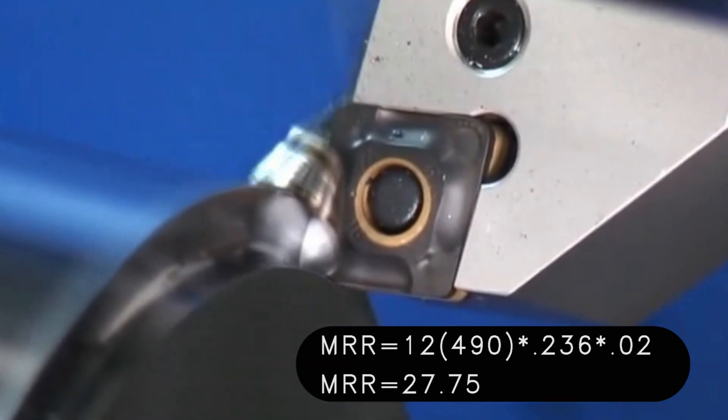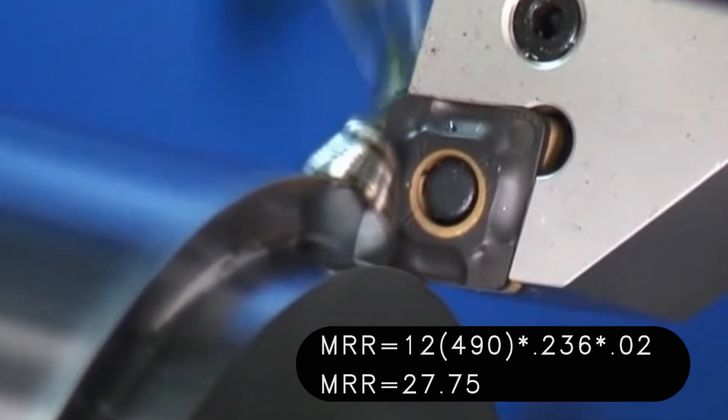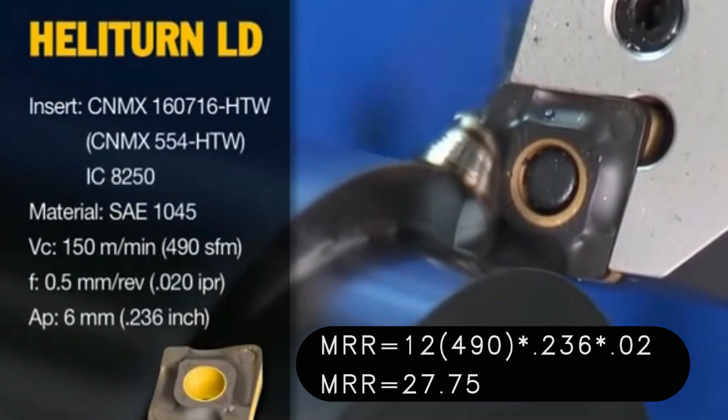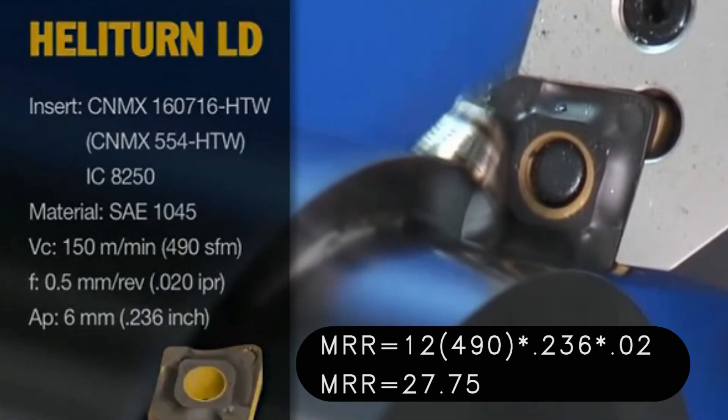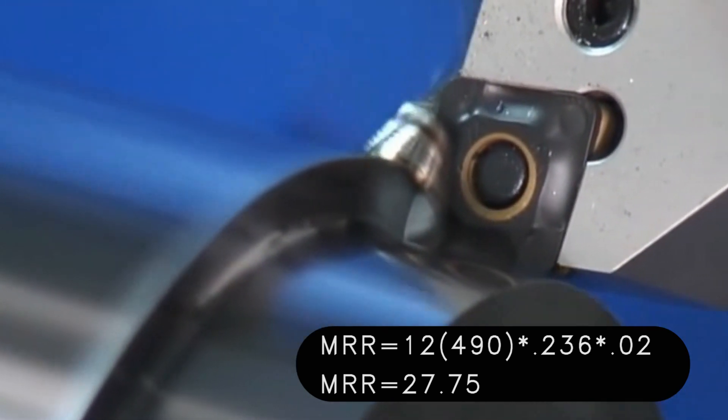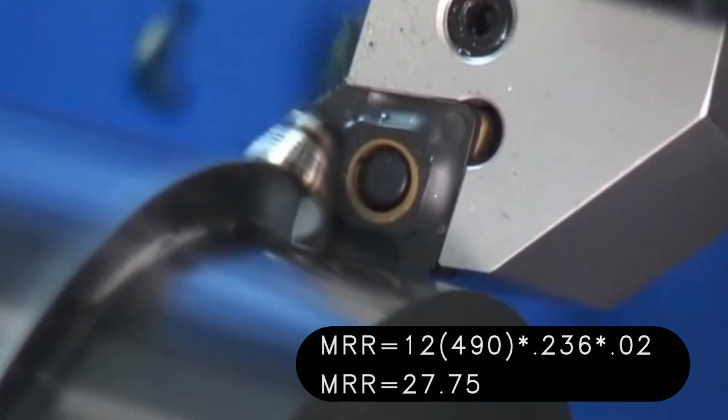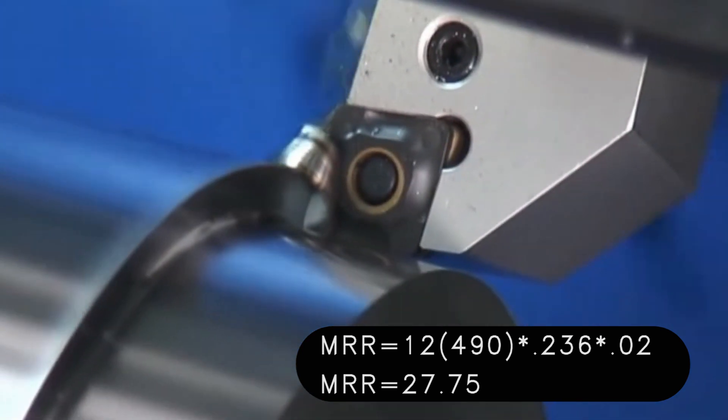It's going in at 236 thou depth of cut, so that's really going at it, and it's able to do that at 20 thou inches per revolution. So the main thing that's making this one rough fast is that it's got that deep depth of cut.